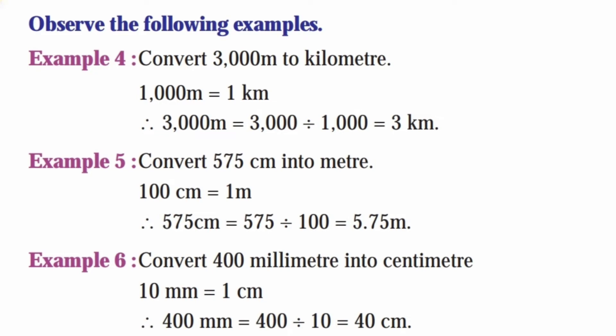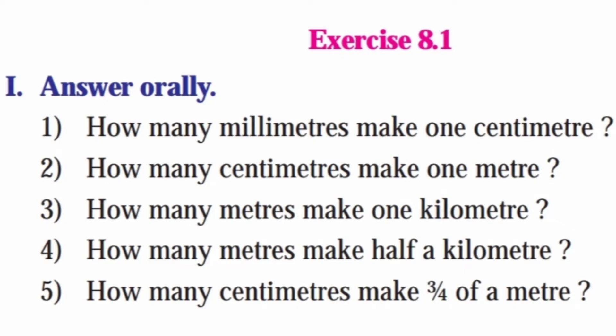Example 4: Convert 3000 meters to kilometers. Since 1000 meters equals 1 kilometer, 3000 divided by 1000 equals 3 kilometers. Example 5: Convert 575 centimeters into meters. Since 100 centimeters equals 1 meter, 575 divided by 100 equals 5.75 meters. Example 6: Convert 400 millimeters into centimeters. Since 10 millimeters equals 1 centimeter, 400 divided by 10 equals 40 centimeters.